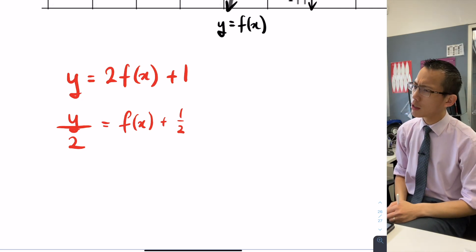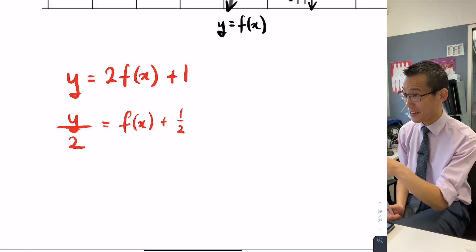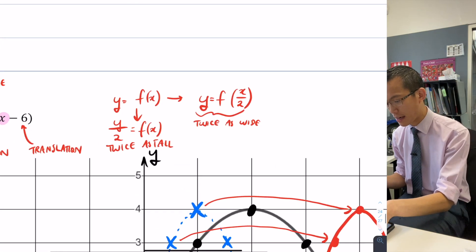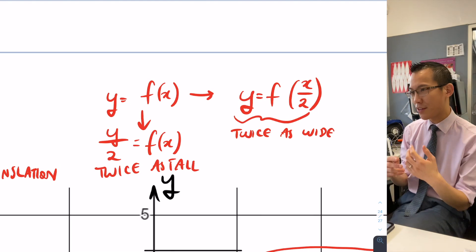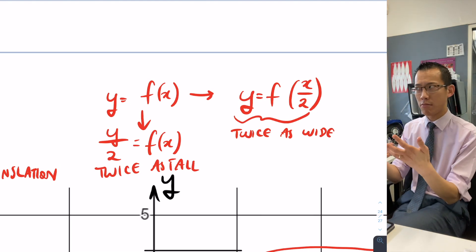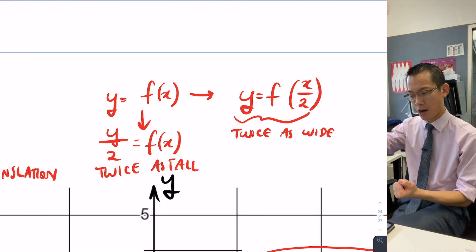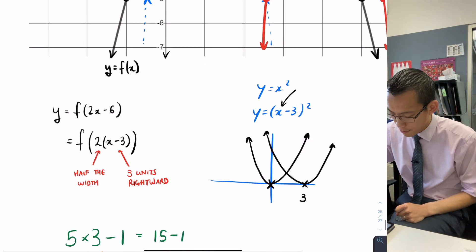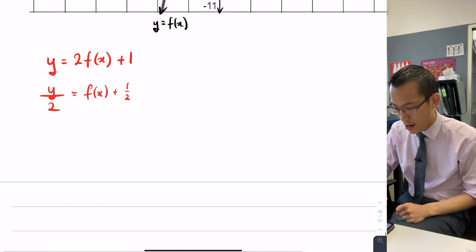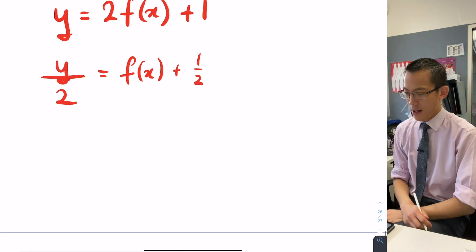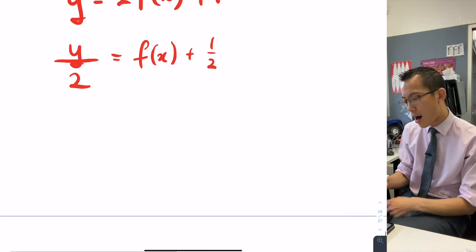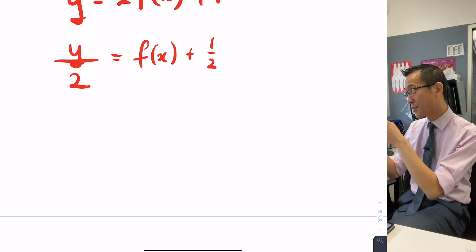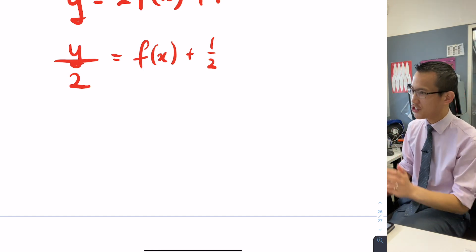So this is actually the example I mentioned before. When everything's weird and backwards — you divide, things get bigger; you multiply, like the example we just did, things get squashed in. That half, because it's not inside with the x, even though it's over on the right-hand side, it's not changing x at all.